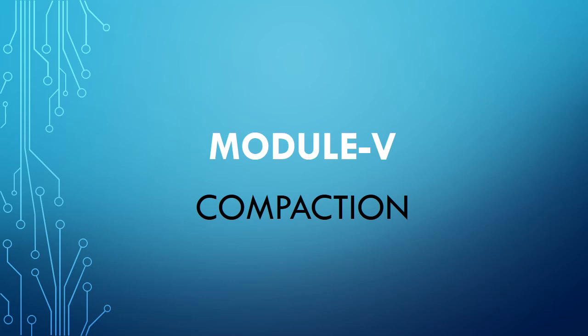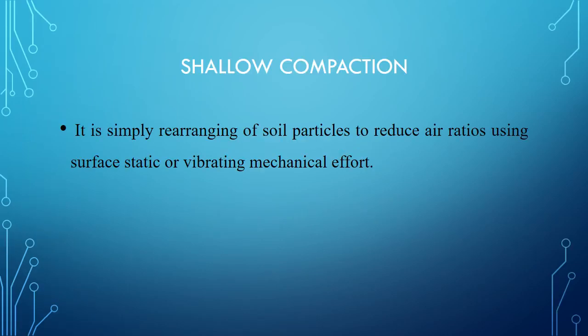In the last session, you studied the first portion regarding compaction — the definition, moisture-density relationship, etc. Now we are studying the different types of compaction. There are generally two types: shallow compaction and deep compaction. Shallow compaction is simply the field or surface compaction, and deep compaction is where soil is compacted to a particular depth.